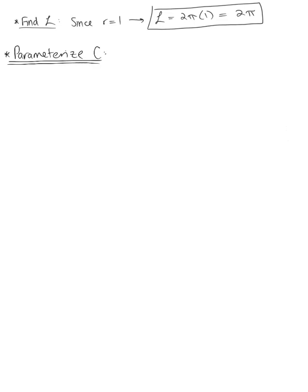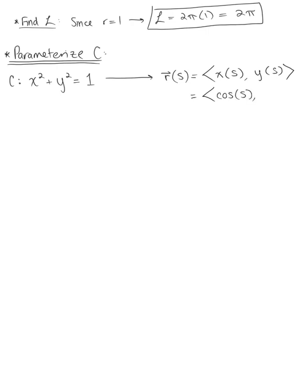Our curve C is the boundary of the region, so in Cartesian coordinates C is defined as the unit circle: x squared plus y squared equals 1. To parametrize this in terms of arc length, we use the vector-valued function r(s), where the x component is cosine of s and the y component is sine of s, for s greater than or equal to 0 and less than or equal to 2π, since we're going around a full circle.